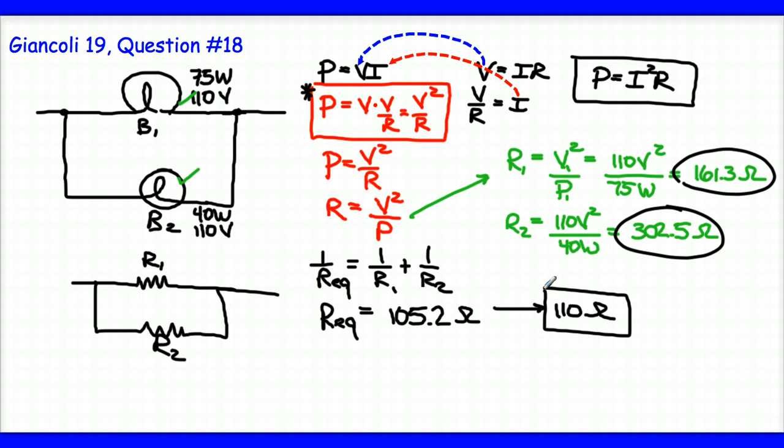While I'm at it, let's just take a look at another way of solving this problem. I could take this expression right here and basically rewrite it and say that one over the resistance is equal to power over V squared.